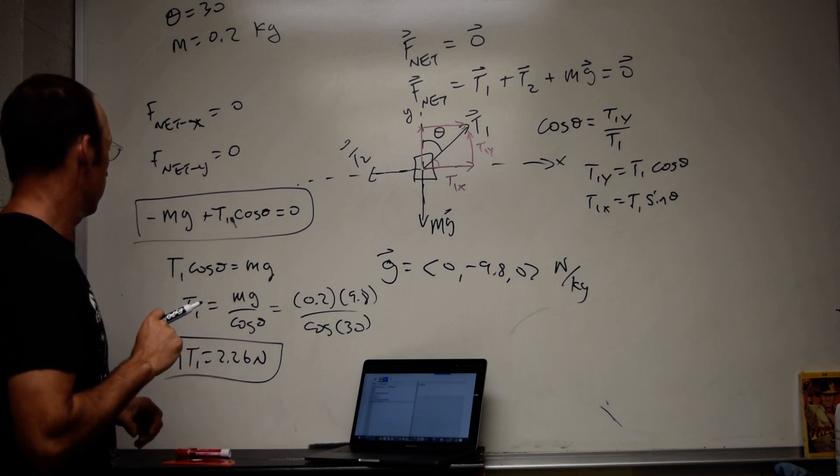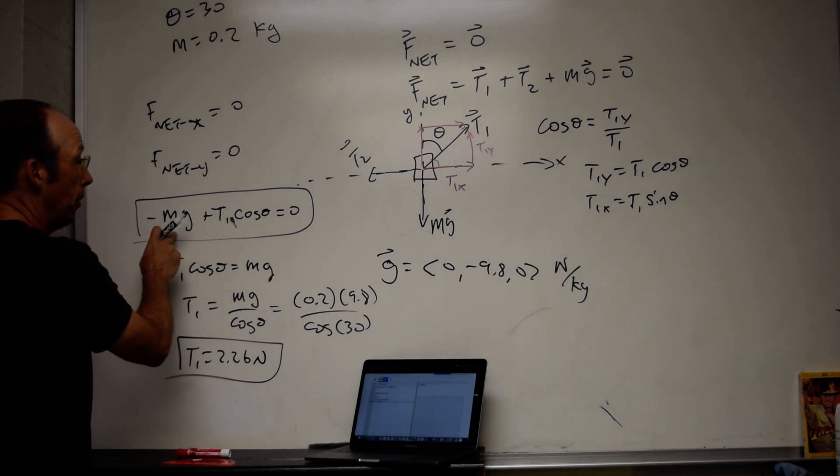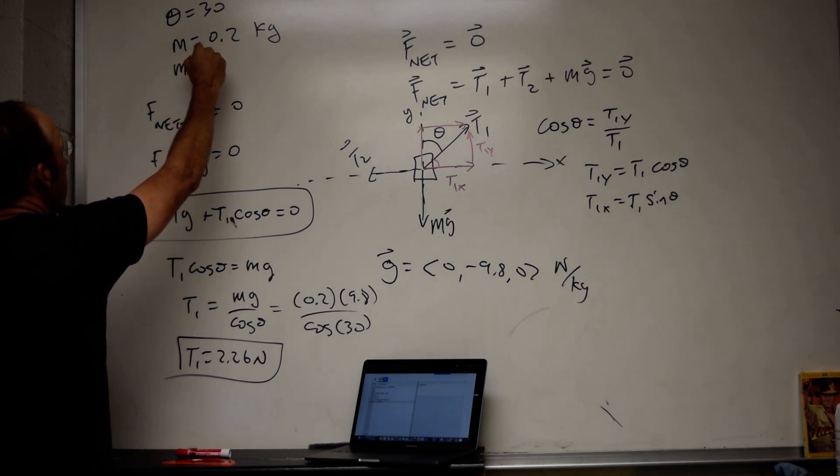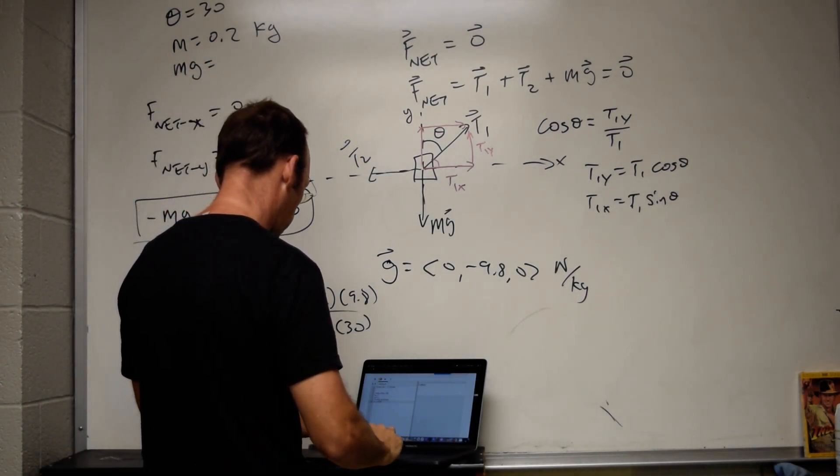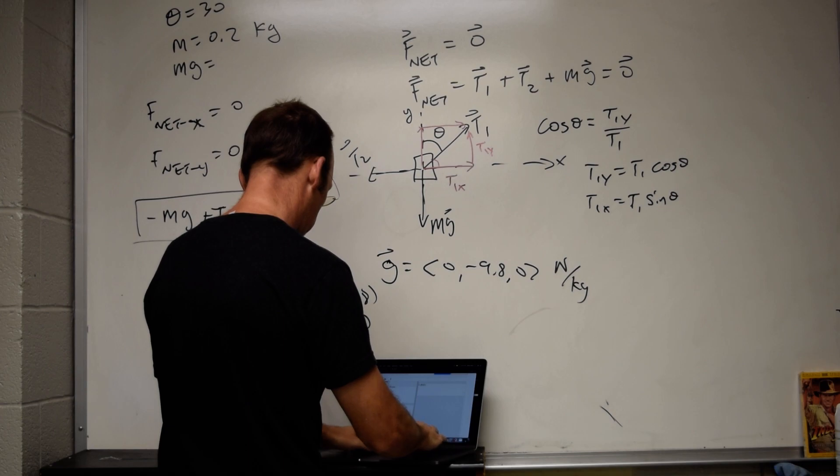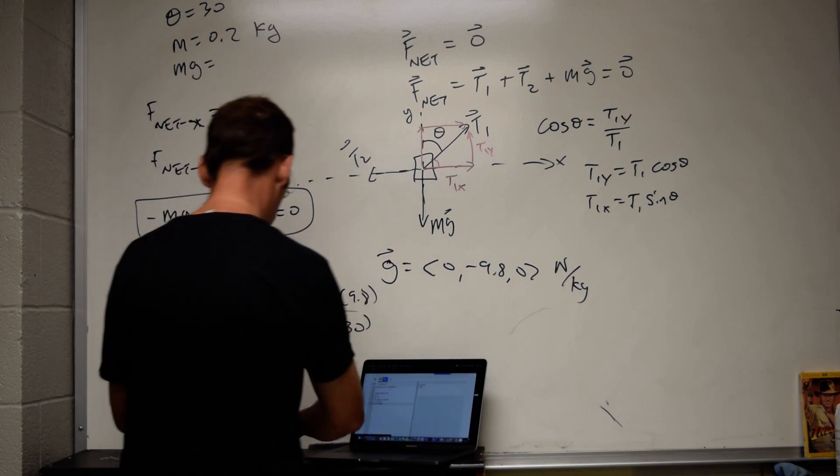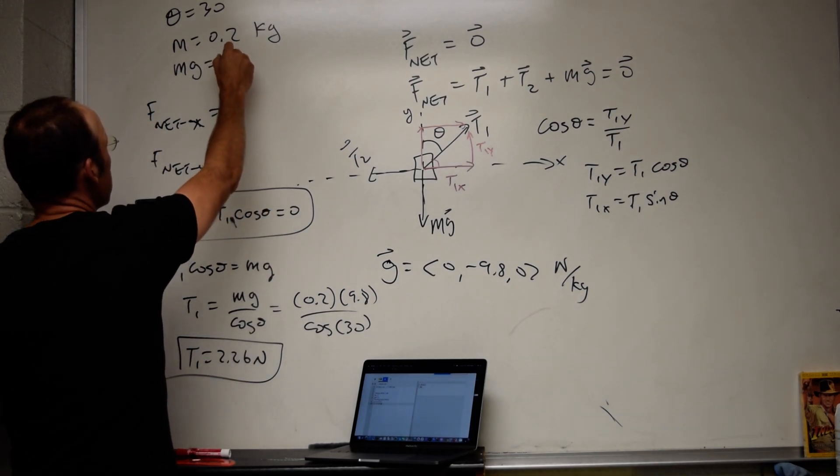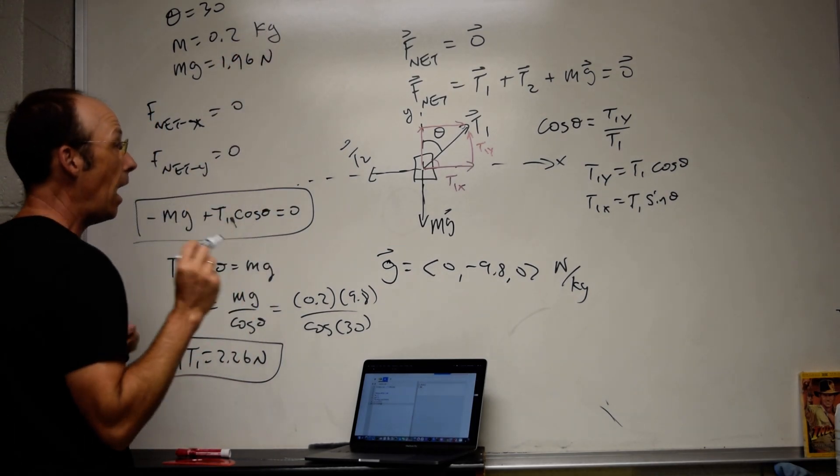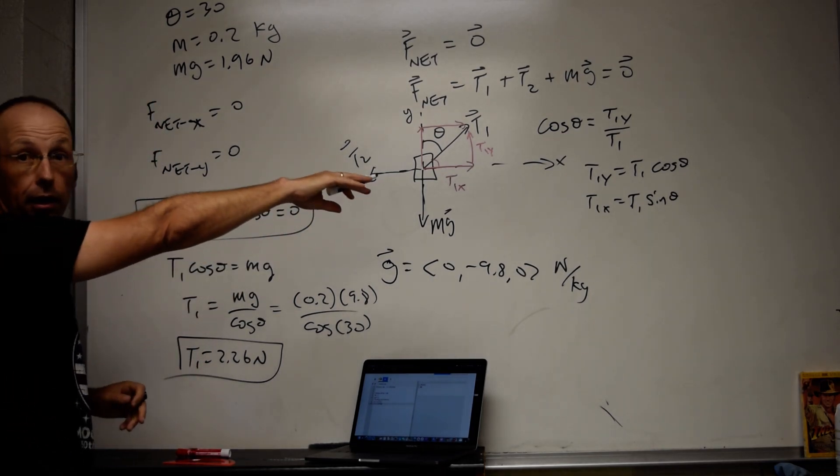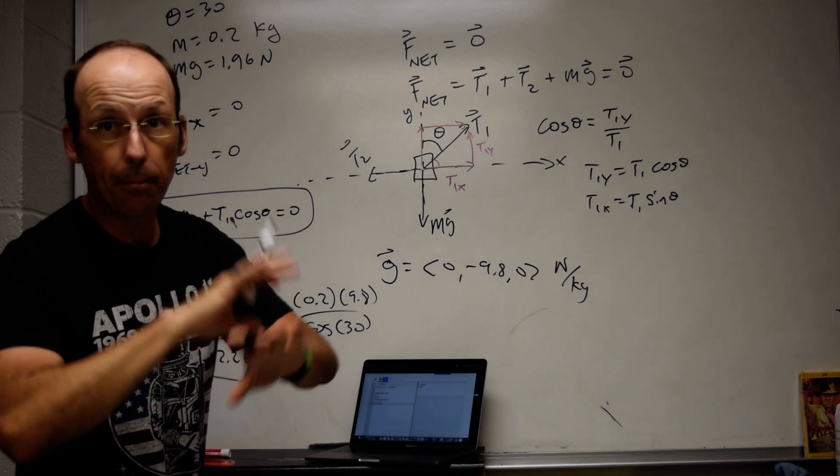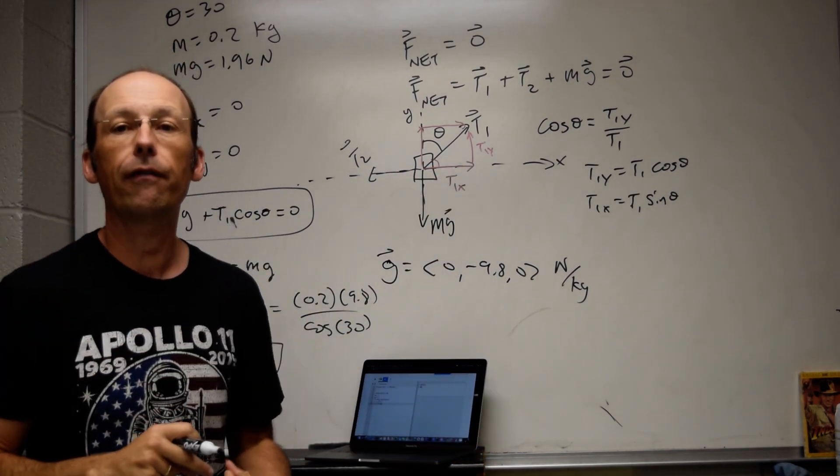Okay. But I already know that the y component is just mg. So let's write it up here. mg equals, let's just calculate that. 1.96. Okay. Now I need to do the x direction. And I'm going to do that over here because I poorly planned my board space. And that was my fault. But I blame the apparatus I had over here.